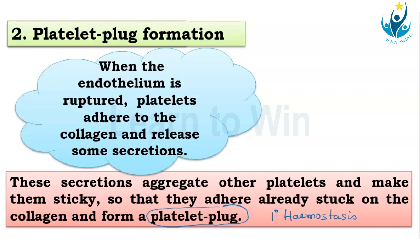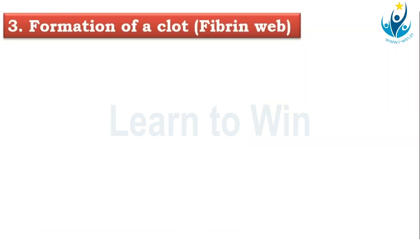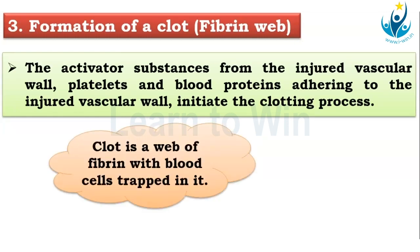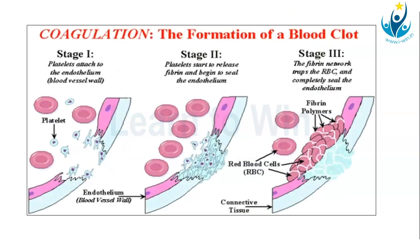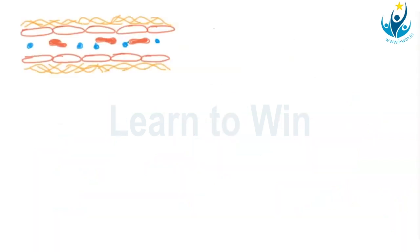To make the platelet plug stronger, you need to cover it with fibrin. The second step is formation of the fibrin mesh or fibrin web, which mixes with the platelet plug to form a clot. This clot is a web of fibrin with trapped blood cells in it. The platelets form the platelet plug, and fibrin polymers are attached to it — the clot is the platelet plug plus the fibrin mesh together. Whatever liquid oozes out after the blood clots is called serum.